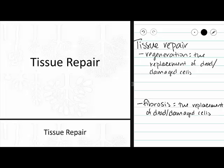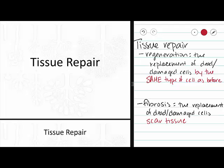Regeneration is going to replace dead or damaged cells with the same type of cell as before. In contrast, fibrosis replaces our dead and damaged cells with scar tissue. So regeneration is replacing dead or damaged cells with the same type of cells as before.